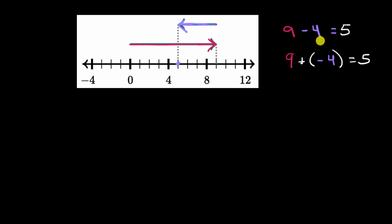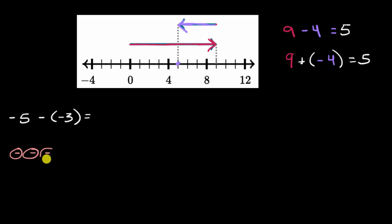Will that work the other way around? If we subtract a negative number, is that the same thing as adding the opposite? Let's try negative five minus negative three. We can think about this with integer chips: start with five negative integer chips, then take away three of those negative chips. What are we left with? We're left with negative two.